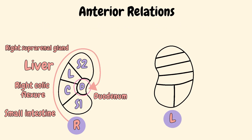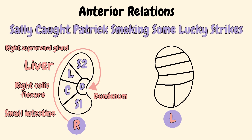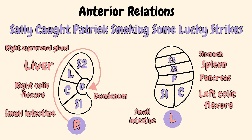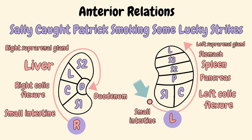For the left kidney we'll use the mnemonic: Sally caught Patrick smoking some lucky strikes. S1 is for the small intestine, C for the left colic flexure, P for the pancreas, S2 for the spleen, S3 for the stomach, and lastly L for the left suprarenal gland. The mnemonic is read from here to here, ending at the top L.